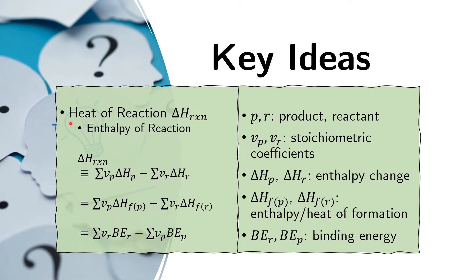Relevant to this problem is the concept of heat of reaction, denoted delta H, also called the enthalpy of reaction. The enthalpy of reaction is the sum of the enthalpies of the products minus the sum of the enthalpies of the reactants, with appropriate stoichiometric coefficients. Because enthalpy is a state variable, the path doesn't matter — the change is always the same if the starting and ending states are the same. The enthalpy of reaction can be calculated in several ways, one of which is using the heat of formation, denoted H sub F.